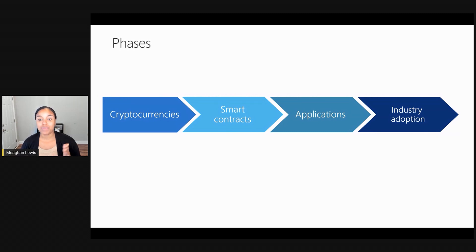Blockchain 4.0 will be all about making blockchain usable in multiple industries. It's an exciting time as we start to see blockchain being adopted in nearly every major industry around the world. As we progress through this series, consider the history of blockchain, the core principles, and start to think about how it will continue to evolve and be used in the future.